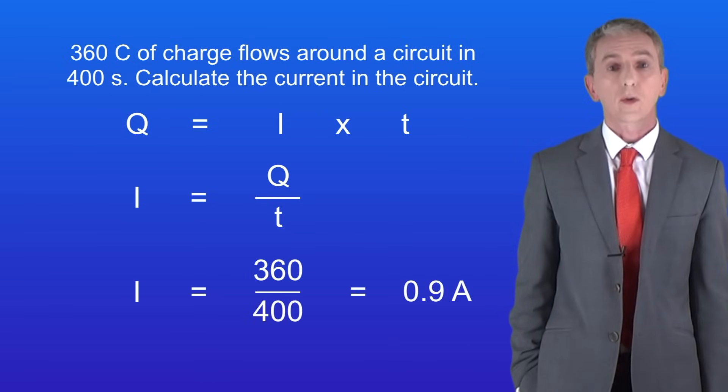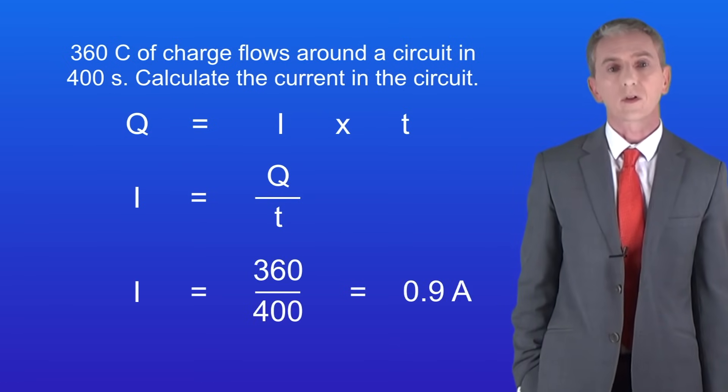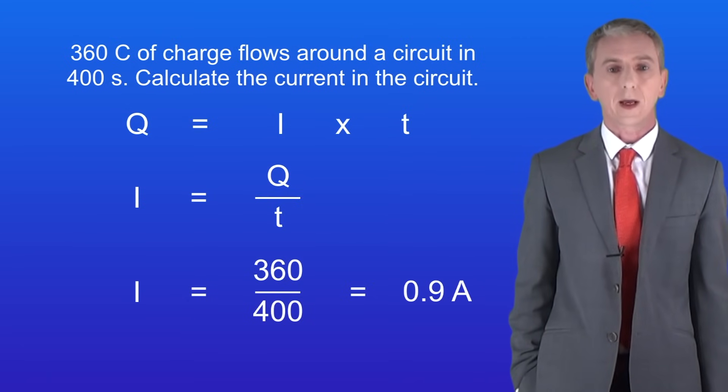In this case the charge flow is 360 coulombs and the time is 400 seconds. Putting these into the equation gives us a current of 0.9 amperes.